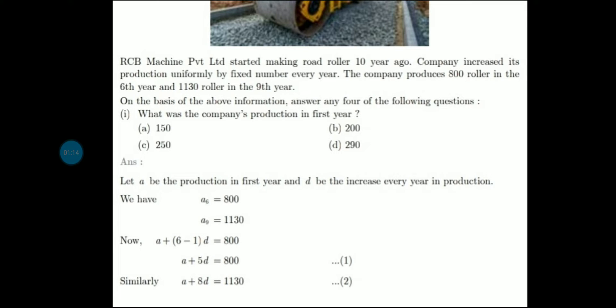Now here we have given A6 value. In the sixth year, the production value is 800 given, and A9 is production in the 9th year, that is 1130. So now we know how we can calculate it here. A plus 5D will be 800. A plus 8D will be 1130.